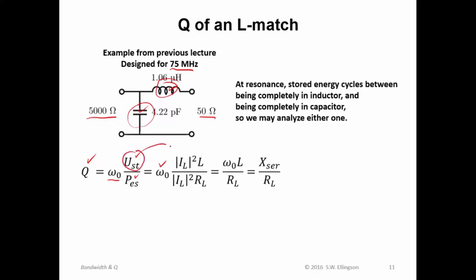Well, the stored energy is given by the expression magnitude I sub L squared times L. Now, this is L, that's the value of the inductance. I sub L is the current through the inductor. The energy stored in the inductor is magnitude I sub L squared times inductance.